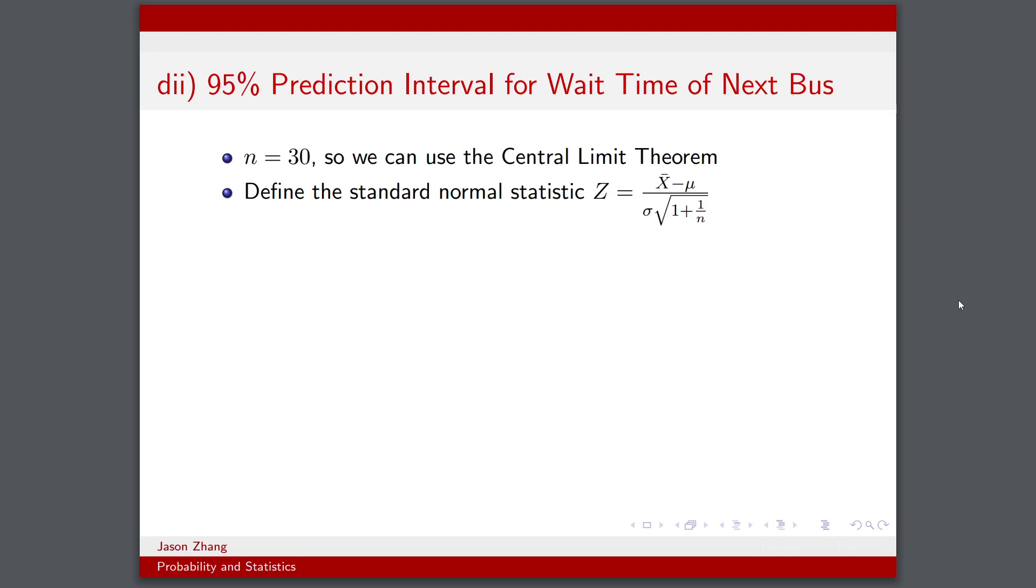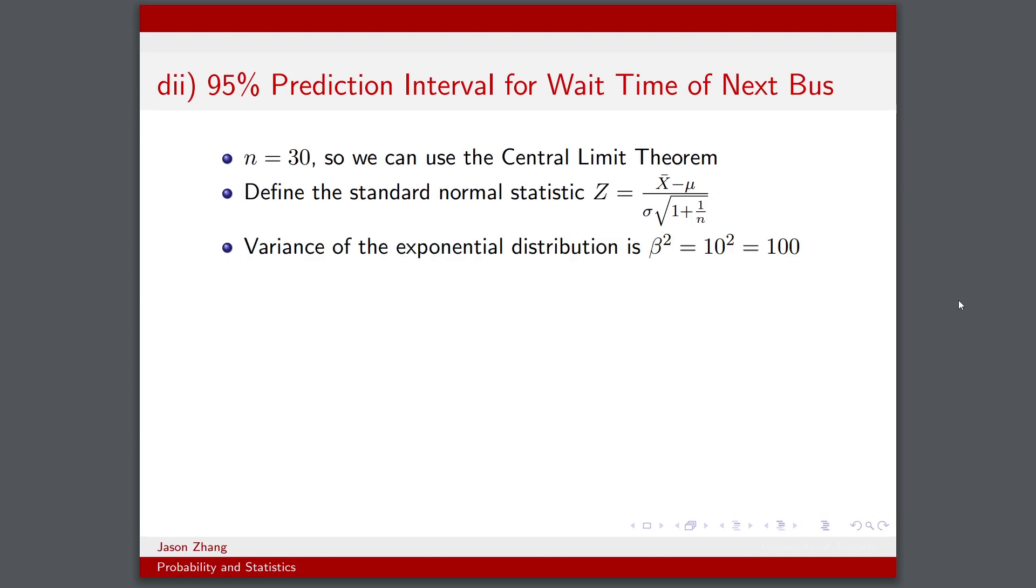So if we were to collect an extra data point, what could that value be? And that value has a much higher variance, simply due to the fact that it's one data point. If you compare it to the n = 30 data points that we've already collected, that mean wait time is going to be less uncertain. There's less uncertainty when you have 30 data points compared to singular data points, which is why in our Z statistic we're going to have a lot more variance coming into play.